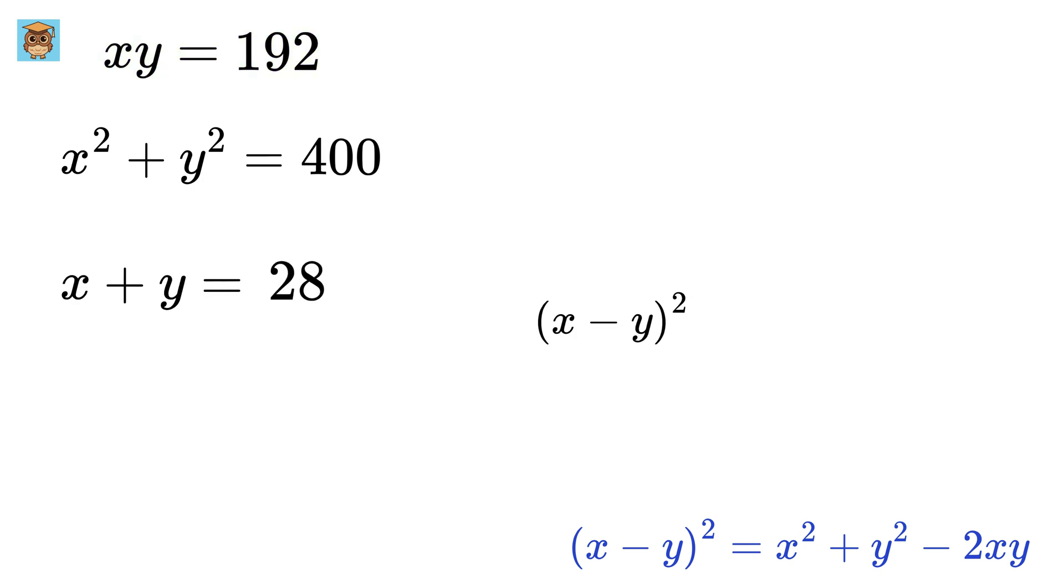Now, consider this. So, we get x minus y whole squared equals 400 minus 2 times 192, or 16. Thus, x minus y equals the root of this, or 4.